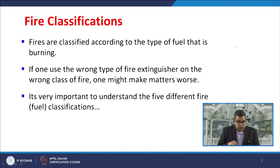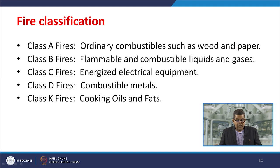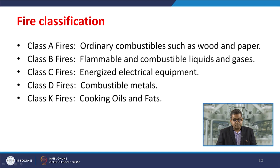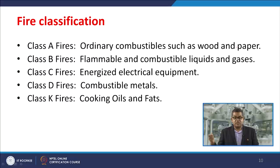It is very important to understand the different classes of fire. There are five different classes: Class A — ordinary combustibles such as wood and paper, extinguishable with normal water; Class B — flammable and combustible liquids and gases; Class C — energized electrical equipment, where water cannot be used as it will propagate the hazard; Class D — combustible metals; and Class K — cooking oils and fats.